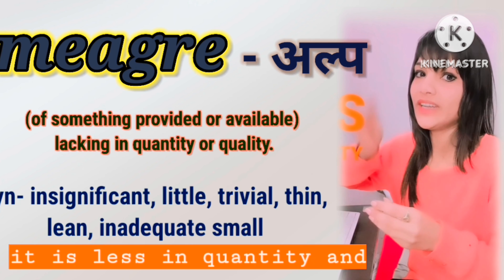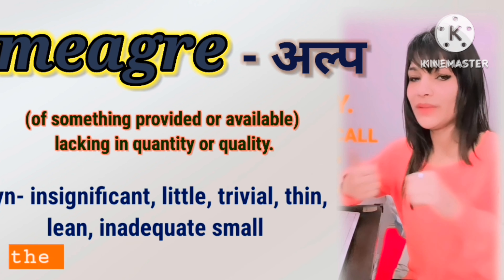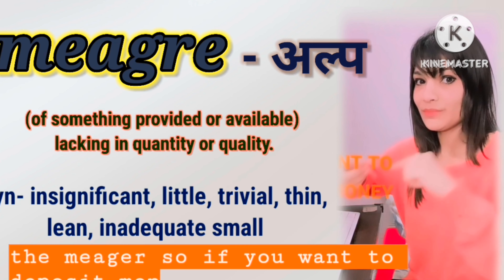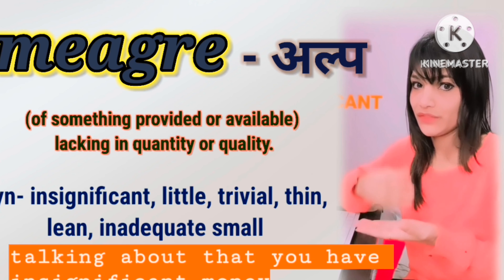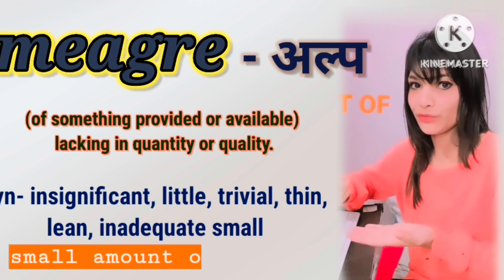So whenever we are talking about meager, it is less in quantity and less in quality — that is what we call meager. If you want to talk about insignificant money, a very small amount of money, we call it a meager amount of money. For example: I have a meager amount of money to deposit.